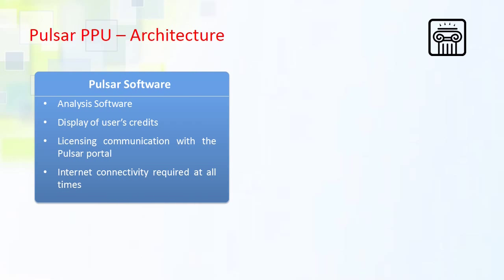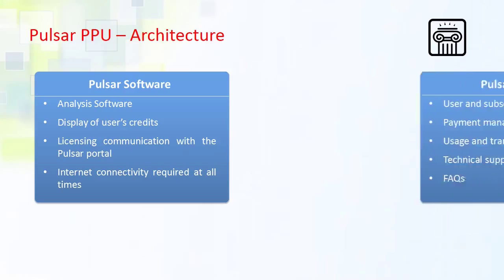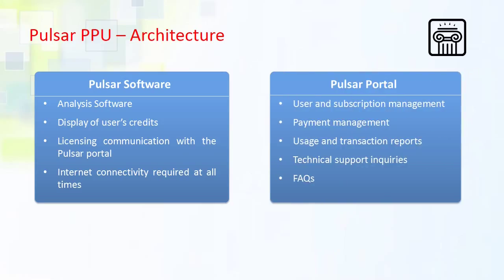The two components of Pulsar PPU are: the Pulsar software itself, which resides locally — it is the QC analysis software which also displays your account credit and communicates with the Pulsar portal for licensing, so the server on which it is installed will need internet connectivity. The second component is the Pulsar portal, where all the accounting and user management is handled. You can get reports on your usage and transactions or get answers to frequently asked questions.